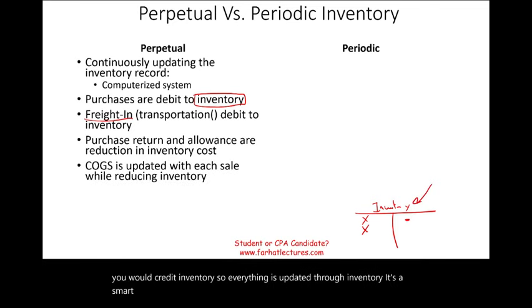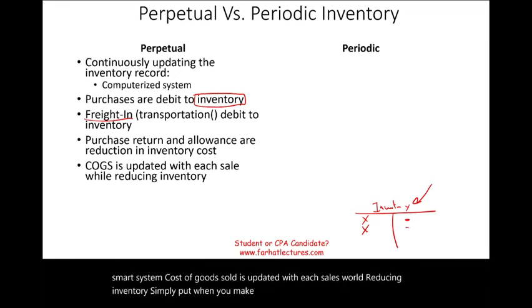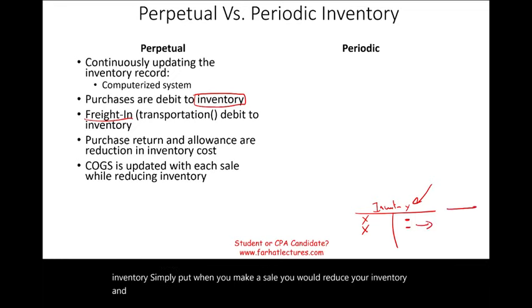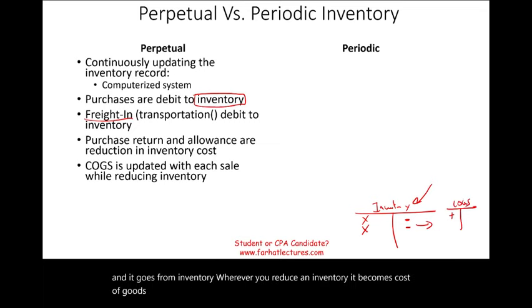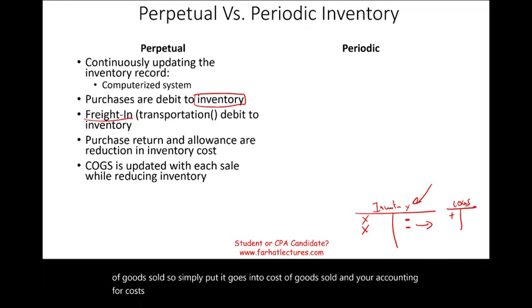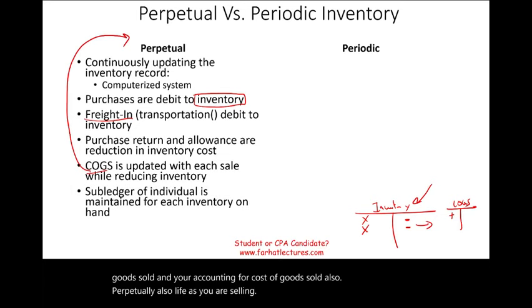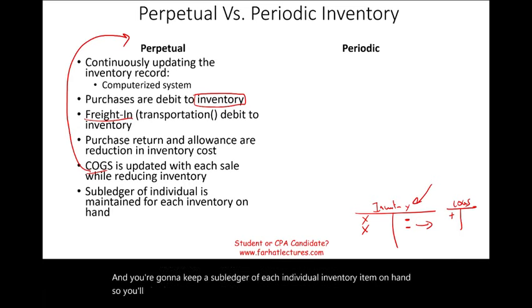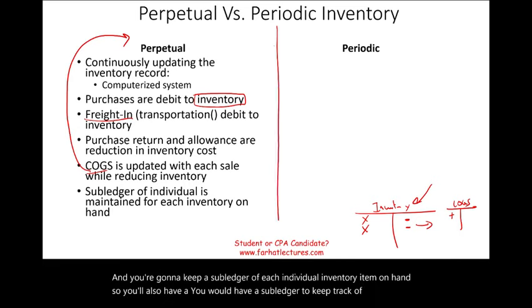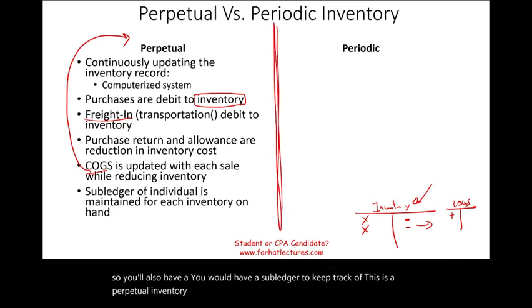Under the perpetual system, cost of goods sold is updated with each sale while simultaneously reducing inventory. When you make a sale, you reduce inventory and debit cost of goods sold, matching the cost to the sale in real time. You also maintain a subledger of each individual inventory item on hand. This is the perpetual inventory system — we'll work through examples next.